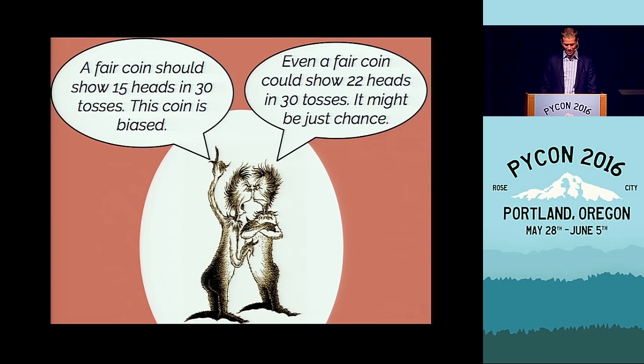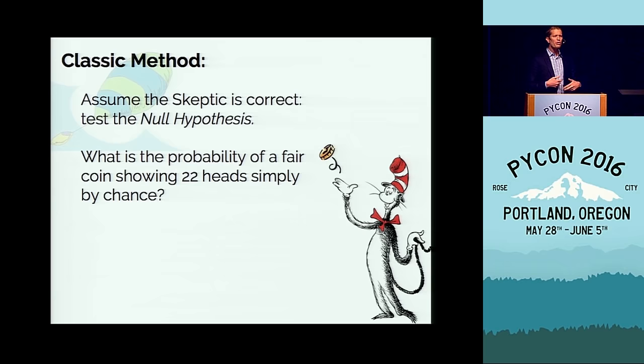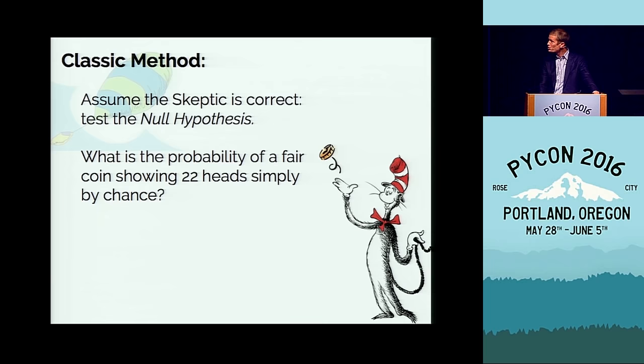We have the advocate on the left saying a fair coin should show 15 heads, and the skeptic on the right saying it could just happen by accident. In statistics, the way we proceed is to assume the skeptic is correct. We're going to test what's called the null hypothesis and ask: what is the probability of a fair coin showing 22 heads just by chance?